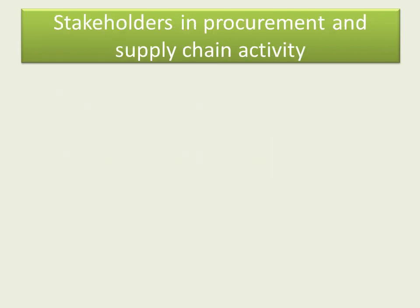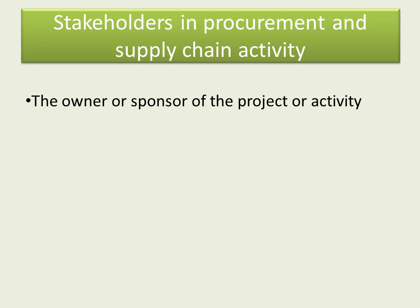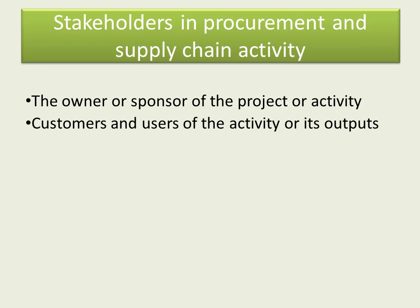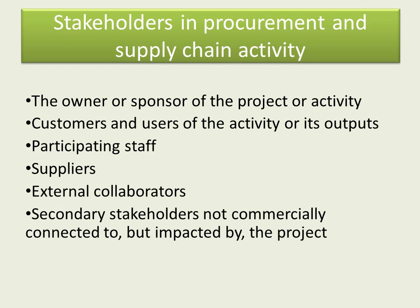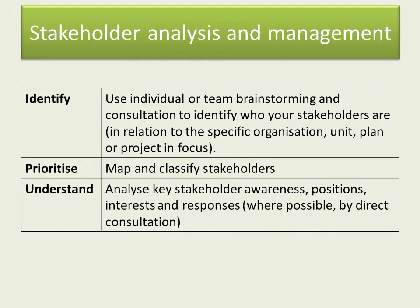Stakeholders in procurement — if we think of a particular project — can include the owner, sponsor, customers, users, staff, suppliers, collaborators, and perhaps secondary stakeholders not commercially connected but impacted by the project. When listing stakeholders it will be fairly wide-ranging. We need to identify them perhaps by brainstorming or consultation, prioritise them by mapping and classifying them, and understand their awareness, positions, interests, and responses, perhaps by directly talking to them.